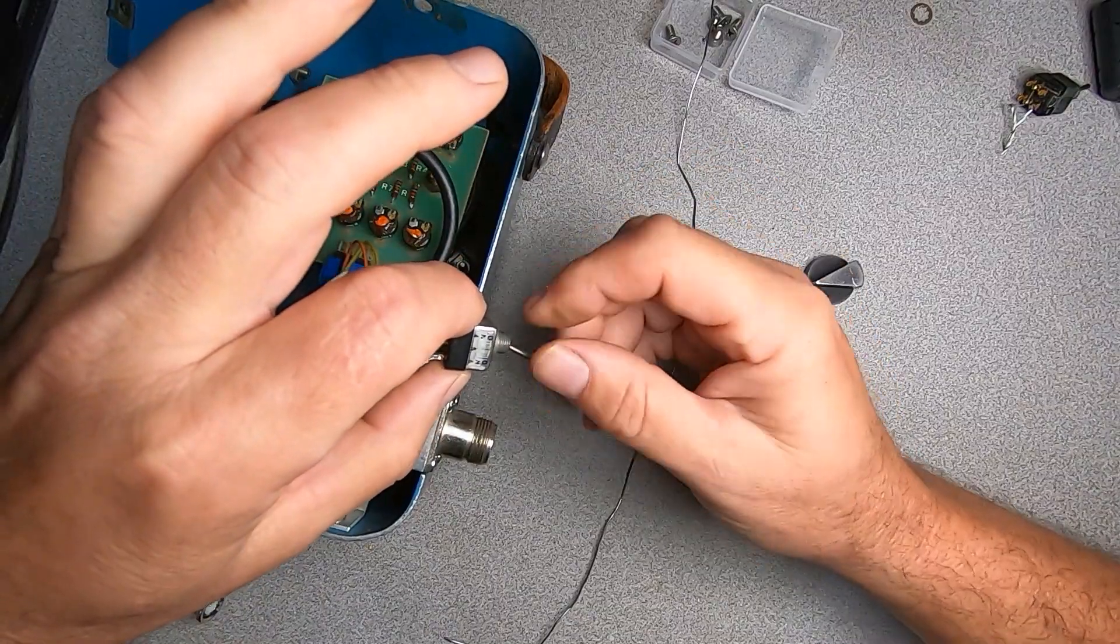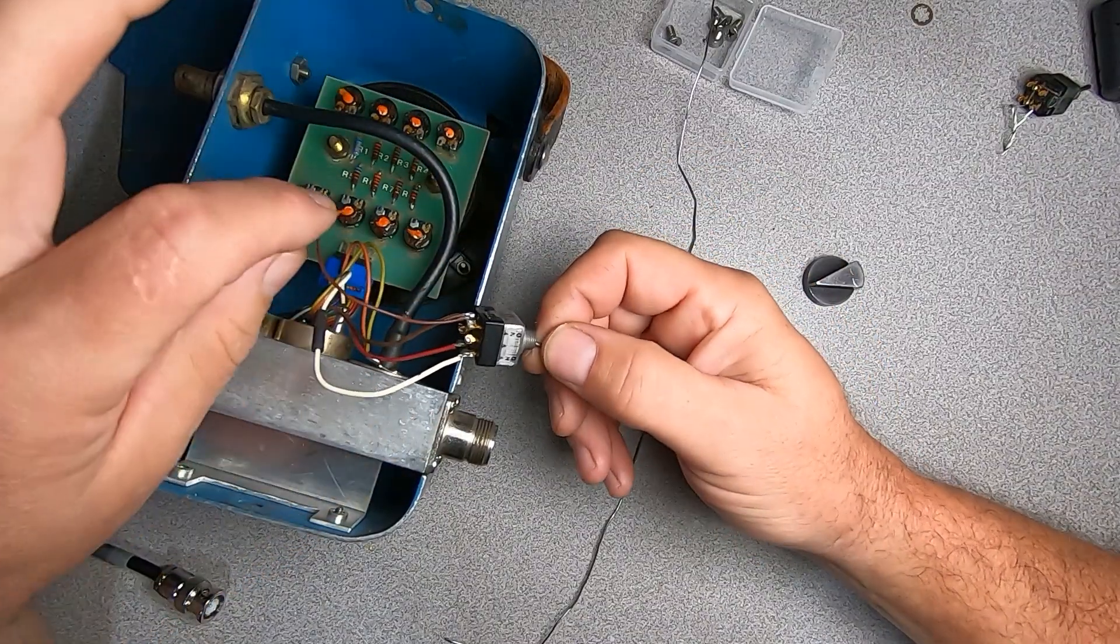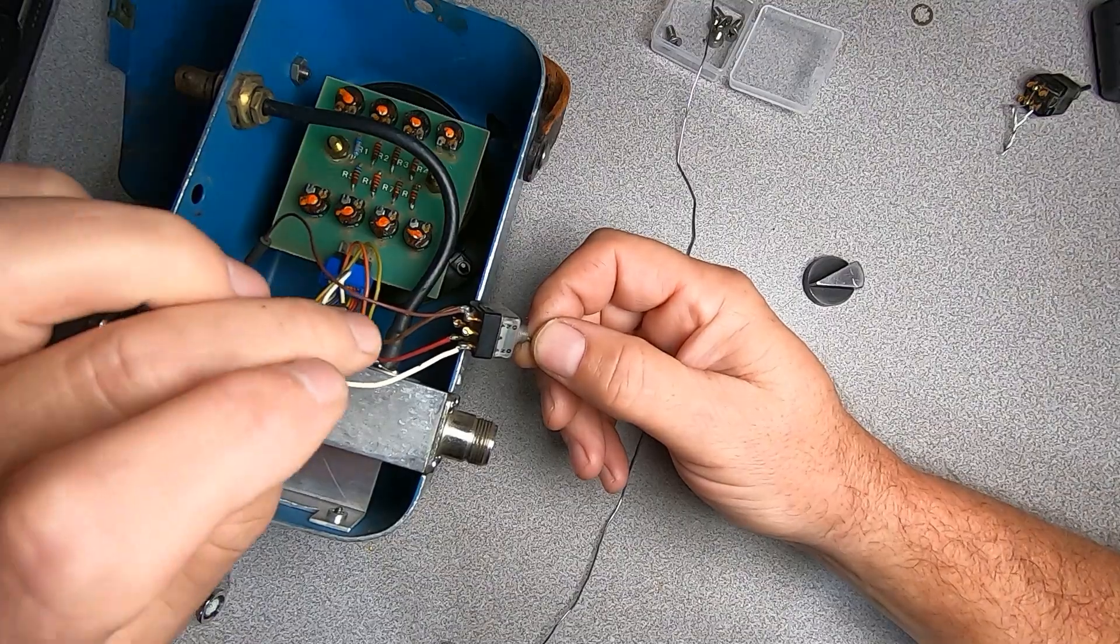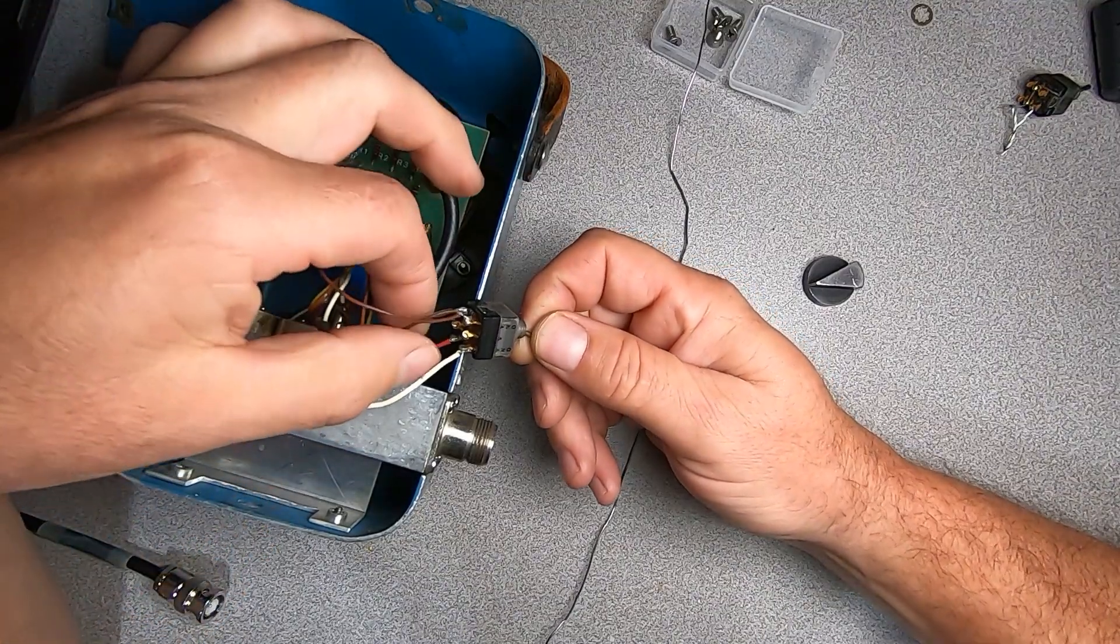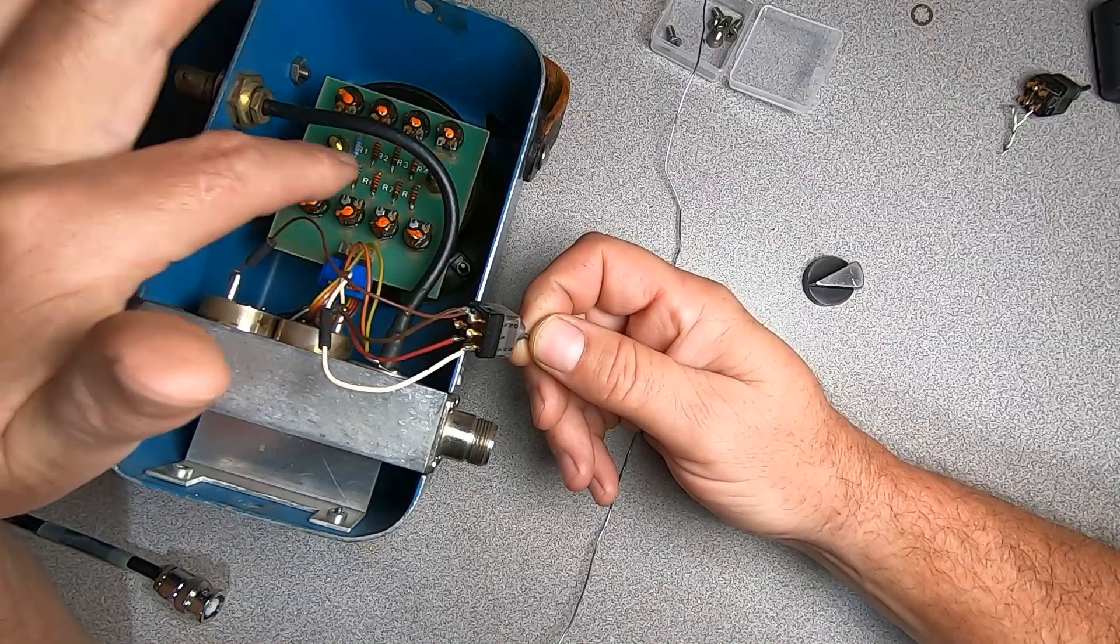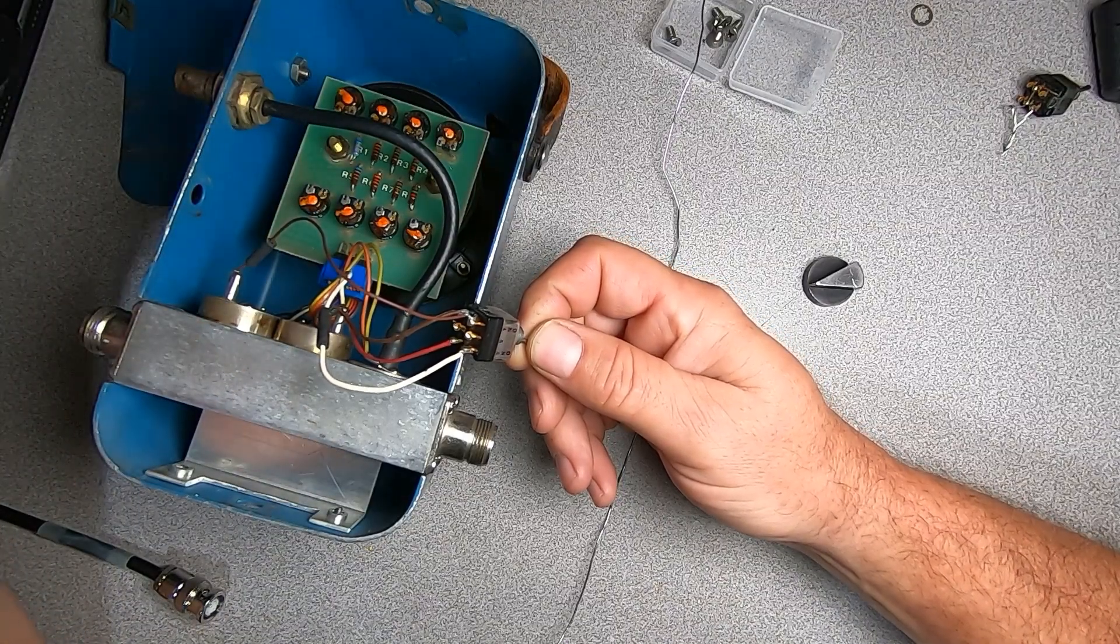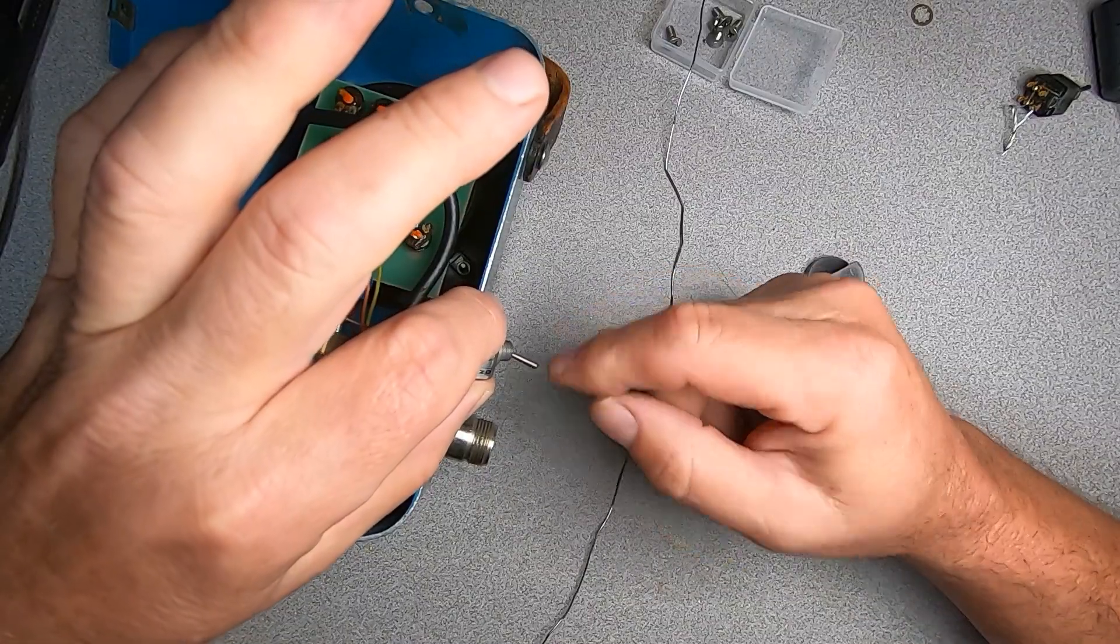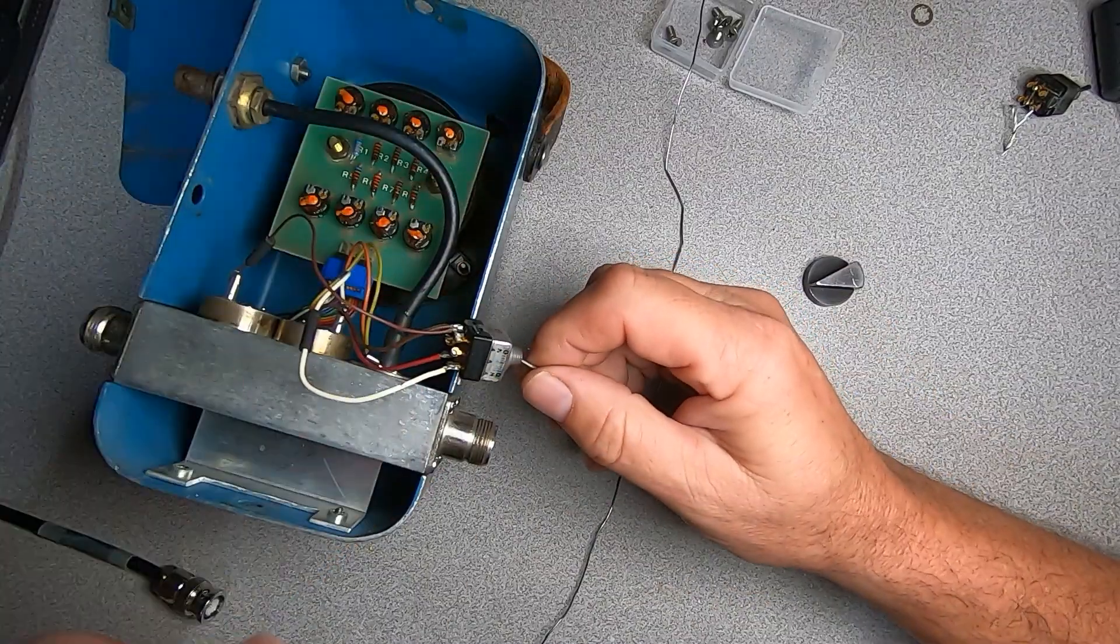So I've soldered in our toggle switch and you can see this is our reflected power sensor, our forward power sensor. These two wires here run to our ribbon cable that go to our resistor board at the back of our meter movement. Let's go ahead and build some kind of a bushing so we can install this in the same recess.